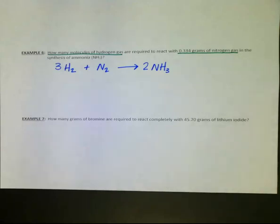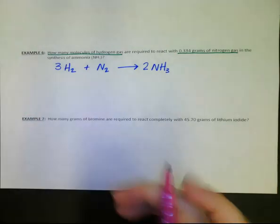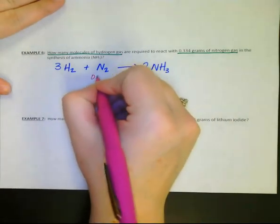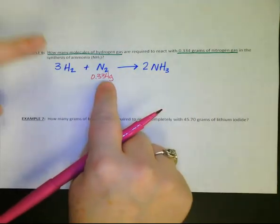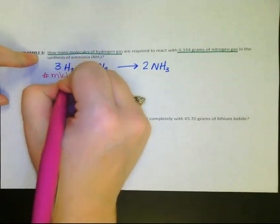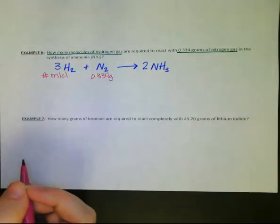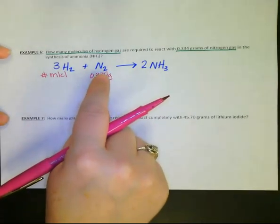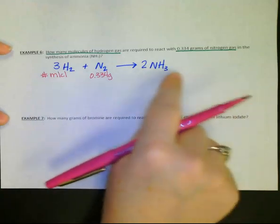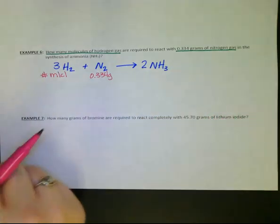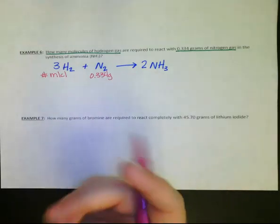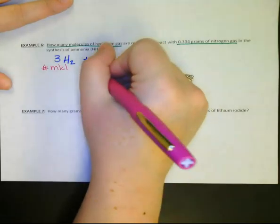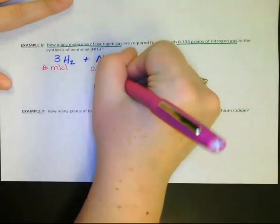Let's see what I need to do next. I need to make my map. I know I have 0.334 grams of nitrogen gas, and I want to know the number of molecules of hydrogen gas. It's okay, completely and totally, to go from one reactant to another. So in this one, I want to go from reactant to reactant. I need to know how to get there, so I'm going to draw my map. I can't do anything with grams, so I need to go to moles.